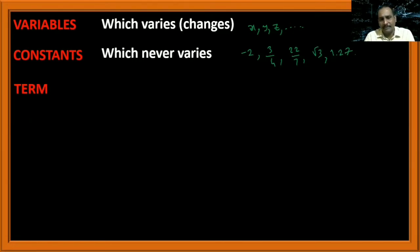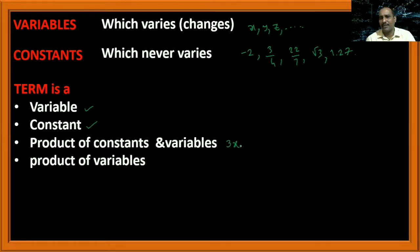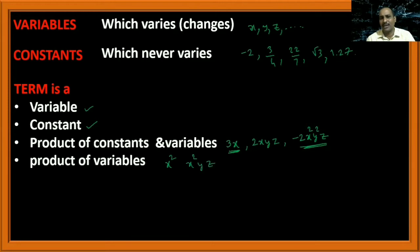What is a term? A term means a constant, a variable, the product of constants and variables, or the product of variables — all these are called as terms. For example, 3 multiplied with variable x gives 3x, which is a term. Similarly, 2xy, z, or minus 2x²y²z are also terms. When you multiply x and x you get x², and x²y z is also a term. So all these together are called as terms.